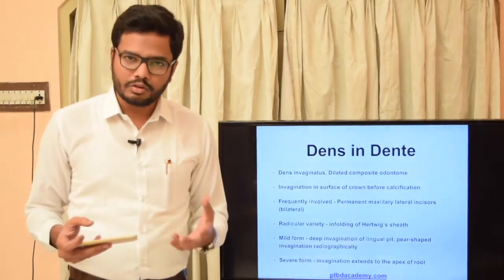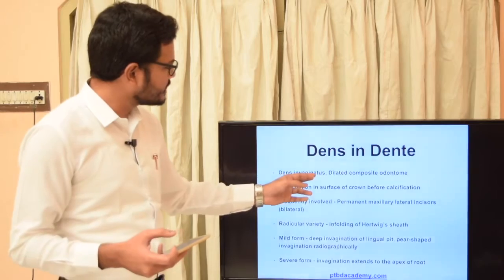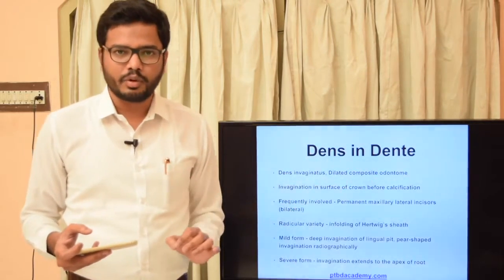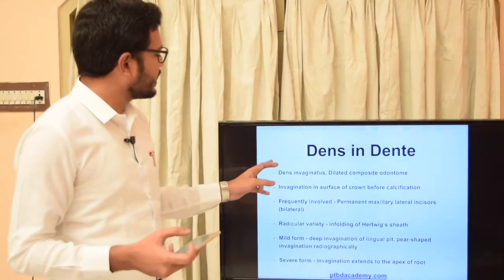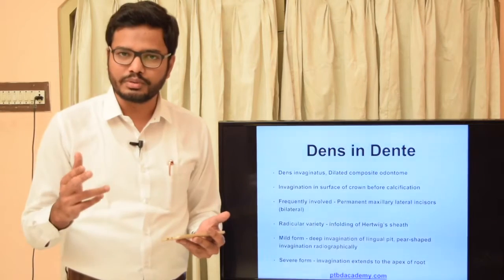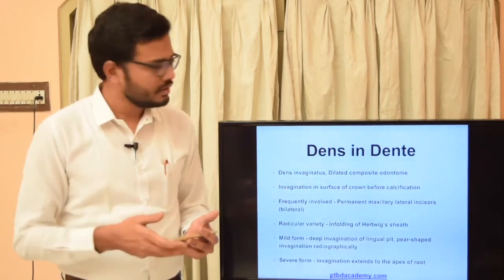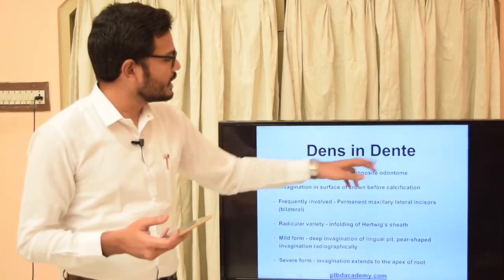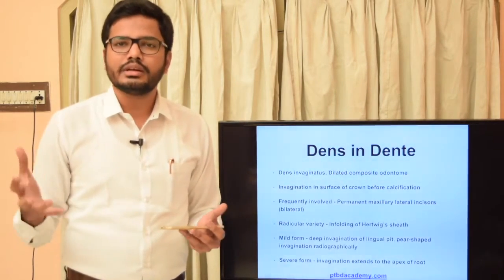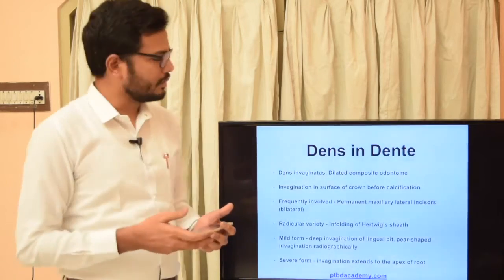Dens in dente is also called tooth within tooth, dens invaginatus, or dilated composite odontome — these synonyms are very important. As the name itself indicates, dens invaginatus means there is invagination of the tooth bud, leading to a tooth within tooth appearance. This is actually a misnomer, because there is no real tooth within another tooth — there is just invagination of the epithelium.